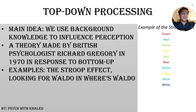This theory was made by a British psychologist called Richard Gregory, four years after bottom-up processing, and it was a response to bottom-up processing. Examples of top-down processing include looking for Waldo in Where's Waldo, and also the Stroop effect.